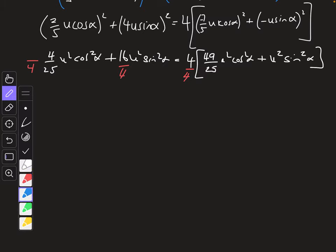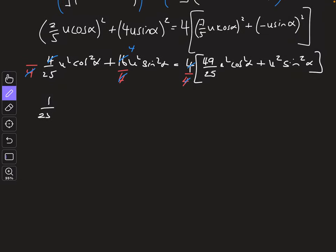So what we end up getting is some quite nice cancelling here, obviously you can multiply the 4 out as well, it would be totally fine, but I'm going to do that just because I saw it and it was kind of quicker. So this becomes 1 over 25u squared cosine squared alpha plus 4u squared sine squared alpha equals all this stuff over here.